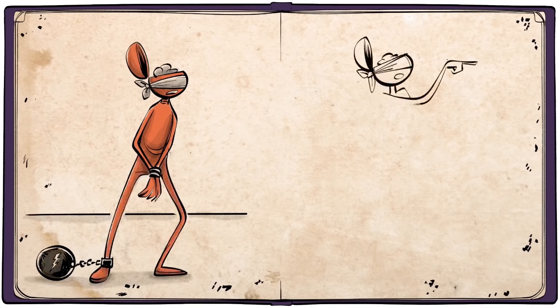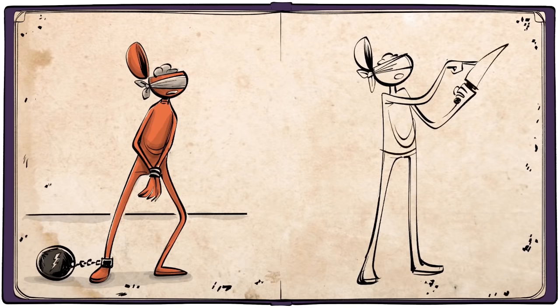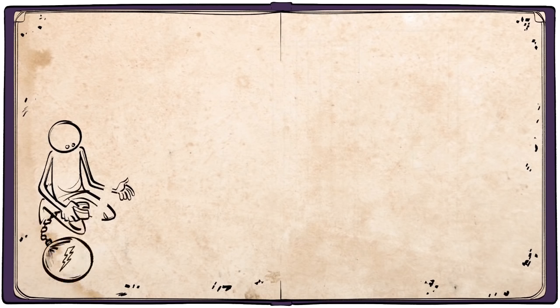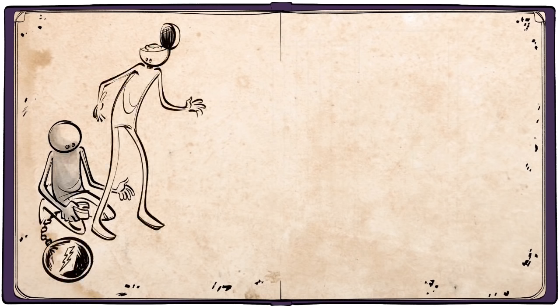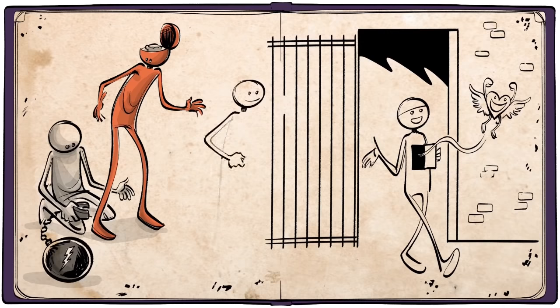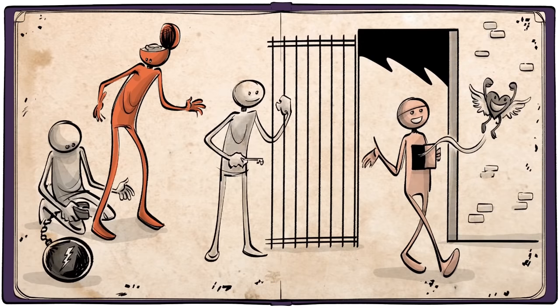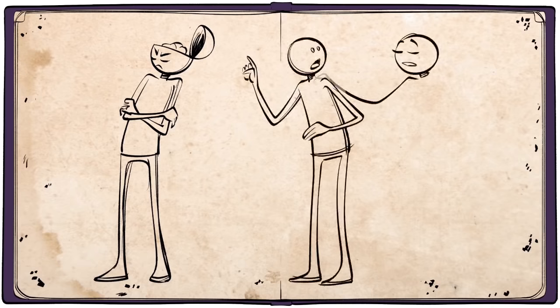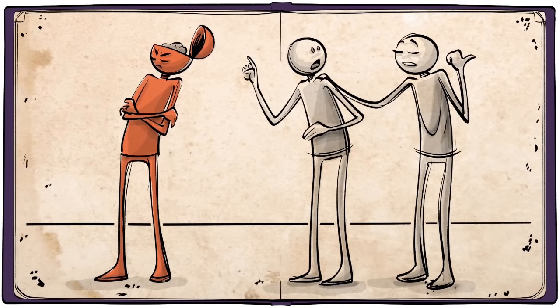Having thus become a mindless tool, the stupid person will also be capable of any evil, incapable of seeing that it is evil. Only an act of liberation, not instruction, can overcome stupidity. Here, we must come to terms with the fact that in most cases, a genuine internal liberation becomes possible only when external liberation has preceded it. Until then, we must abandon all attempts to convince the stupid person.